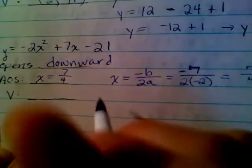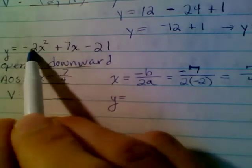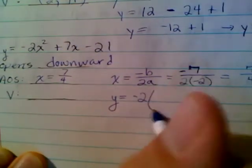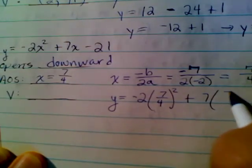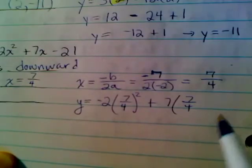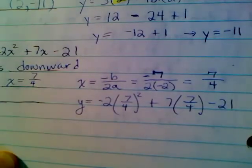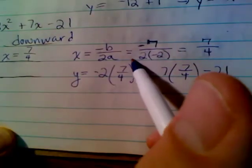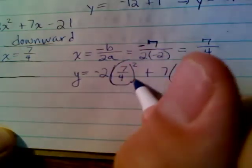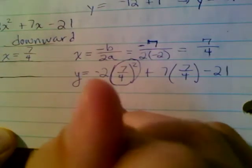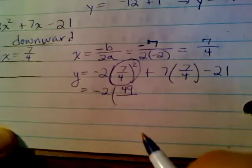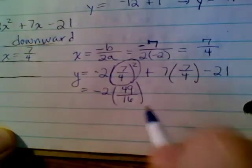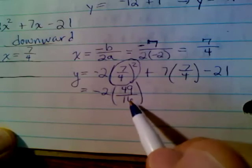And then to find the vertex, y equals negative 2 times 7 over 4 squared plus 7 times 7 over 4 minus 21. Yikes! So now we have to square a fraction. I'm probably going to take an extra step this time. So negative 2 times 7 squared over 4 squared. 7 squared is 49. 4 squared is 16.